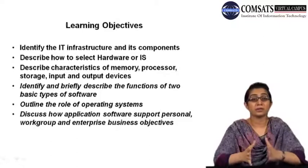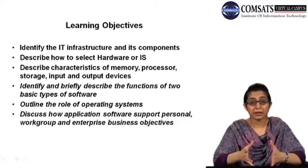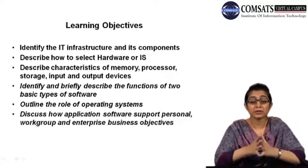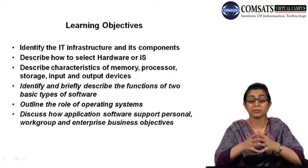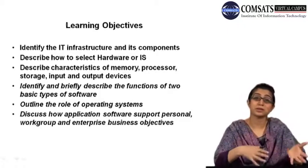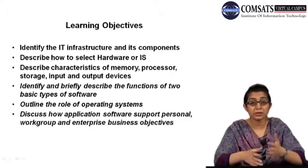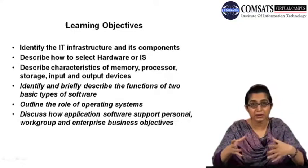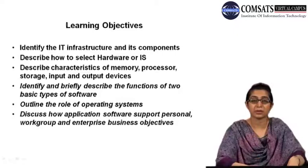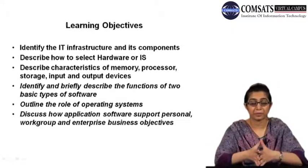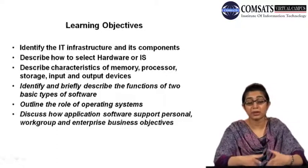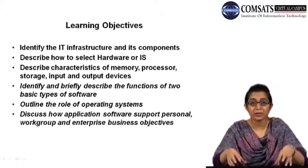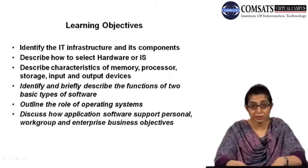Now when we talk about software, we are going to identify and briefly describe the functions of two basic types of software: system software and application software. Then we are going to outline the role of operating systems — what different kinds of operating systems work at a personal level and at enterprise level. Then we are going to discuss how application software supports personal, workgroup, and enterprise business objectives, as well as what kinds of application software are available.